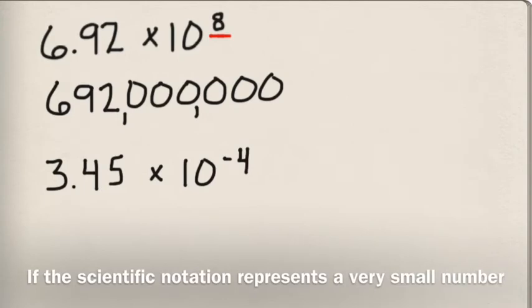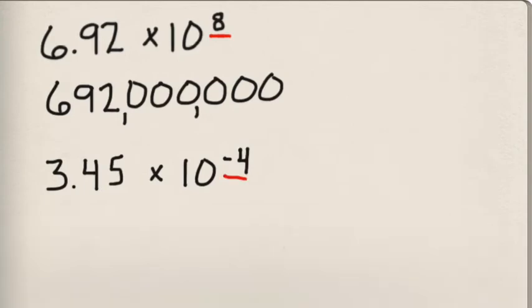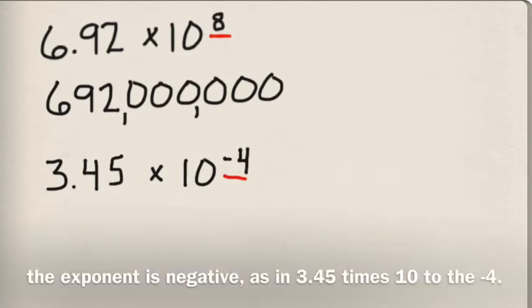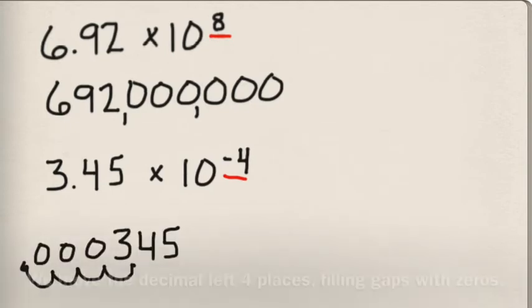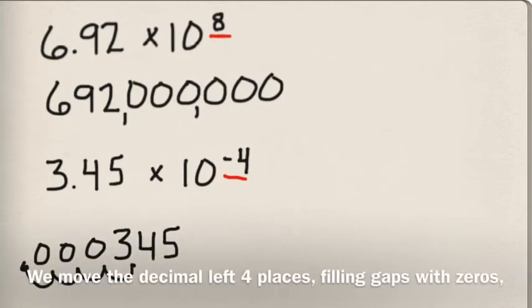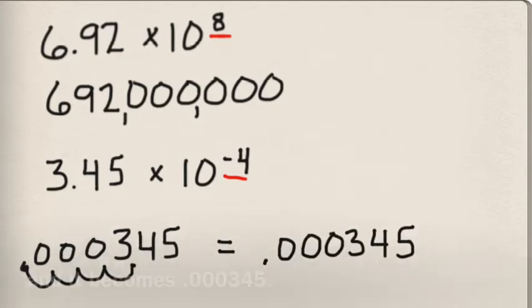If the scientific notation represents a very small number, the exponent is negative, as in 3.45 times 10 to the minus 4. Move the decimal left 4 places, filling gaps with zeros, and it becomes 0.000345.